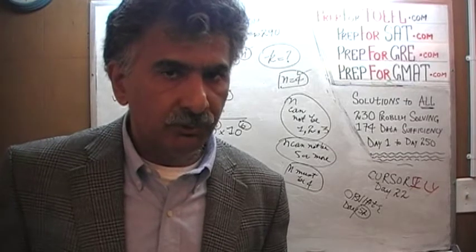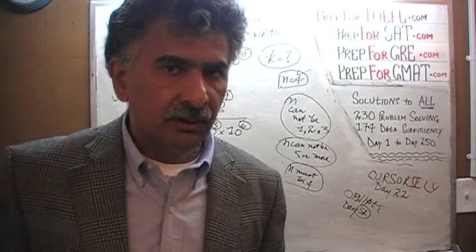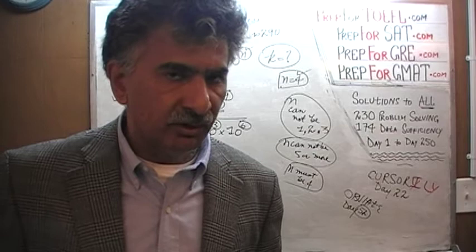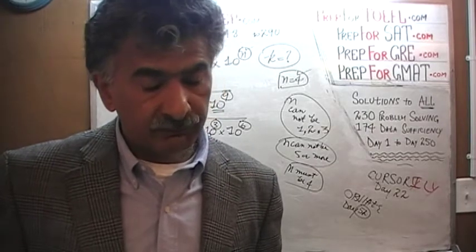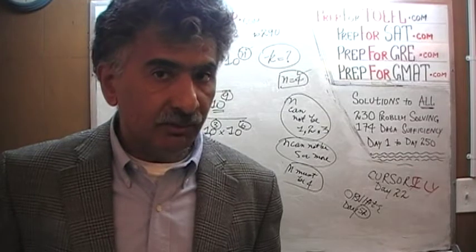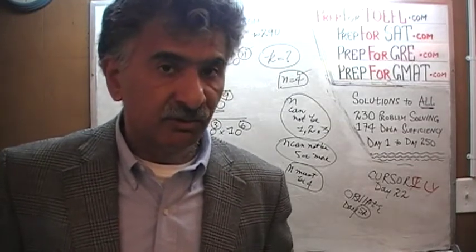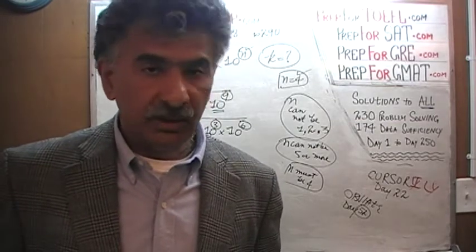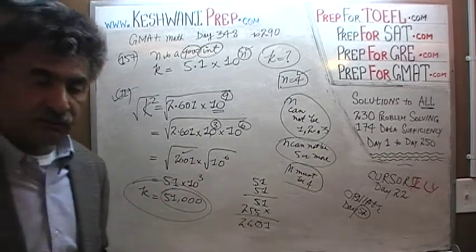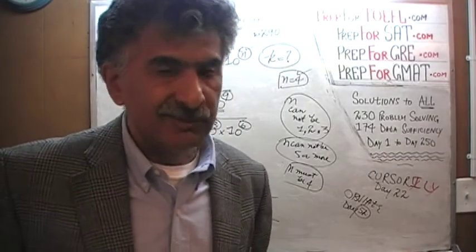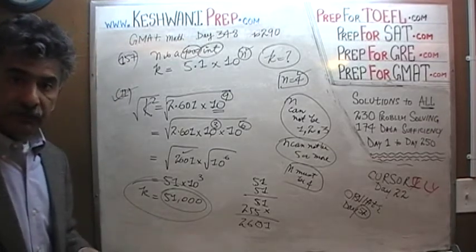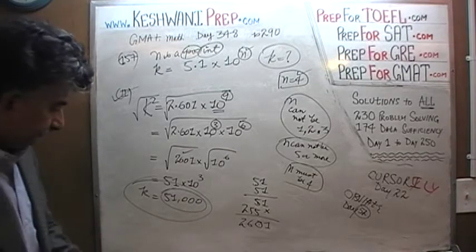As I always remind you, the two statements never contradict each other and never give a different answer. If you arrive at two different values of k from the two statements, something has gone wrong in your work. Both statements gave us k = 51,000. That was the end of the sermon. I shall see you tomorrow. Bye now.